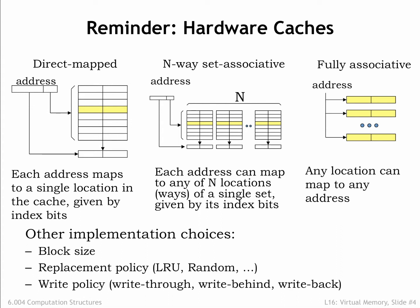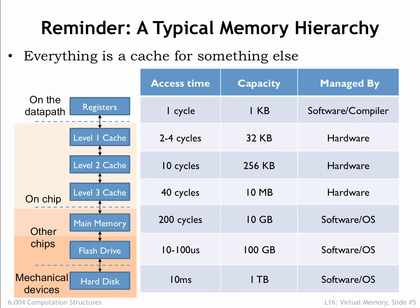We also discussed appropriate choices for block size — the number of words in a cache line — replacement policy, how to choose which cache line to reuse on a cache miss, and write policy, deciding when to write changed data back to main memory. We'll see the same choices again in this lecture as we work to expand the memory hierarchy beyond main memory. We never discussed where the data in main memory comes from and how the process of filling main memory is managed. That's the topic of today's lecture.